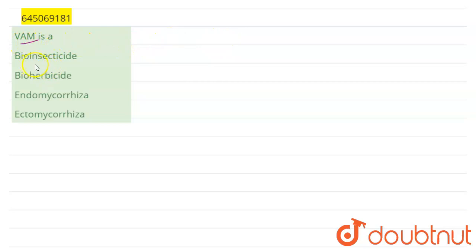VAM is a - our options are bioinsecticide, bioherbicide, endomycorrhiza, and ectomycorrhiza. So the full form of VAM is vascular, V for vascular, A for arbuscular, so vascular arbuscular, and M for mycorrhiza.